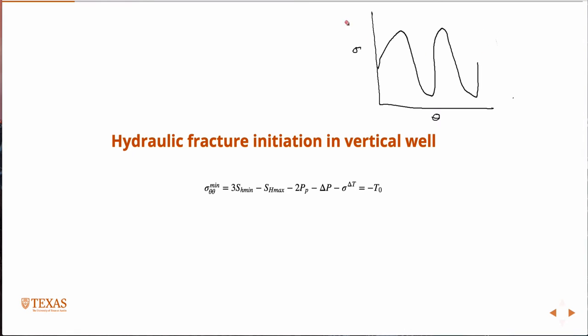It oscillates as you go around, and if this was zero—no stress—whenever the hoop stress goes into tension, so this is sigma theta theta, you're going to have a chance to initiate fractures. We typically say the rock strength is zero, so if this goes into any kind of tensile stress, then you initiate a fracture. But most rocks have a little bit of tensile strength, right? So we'd say that's T0.